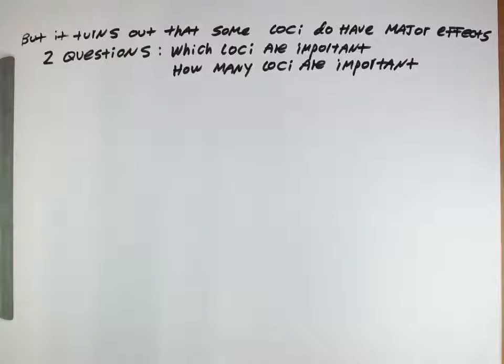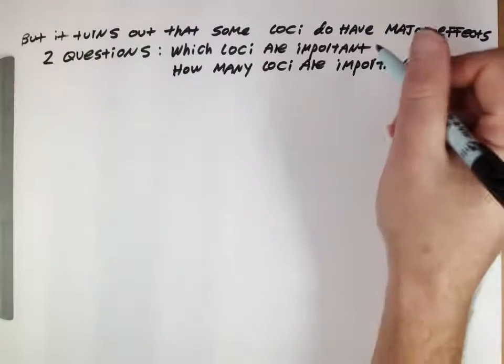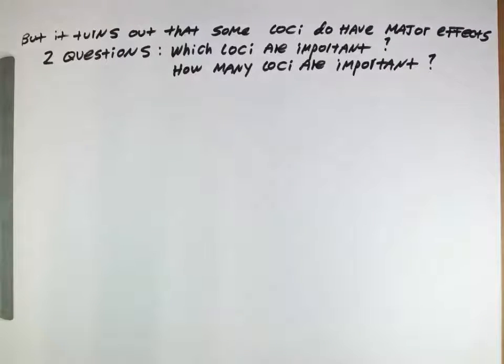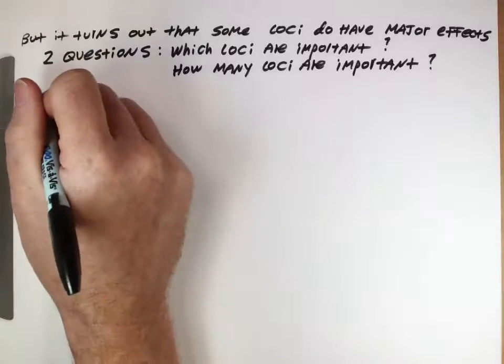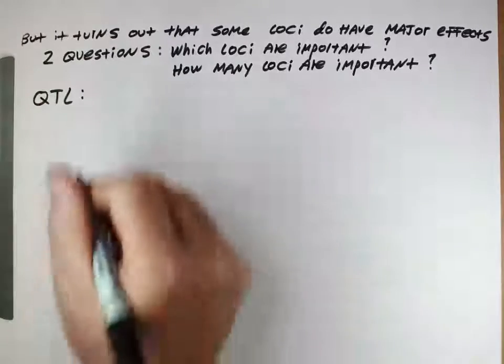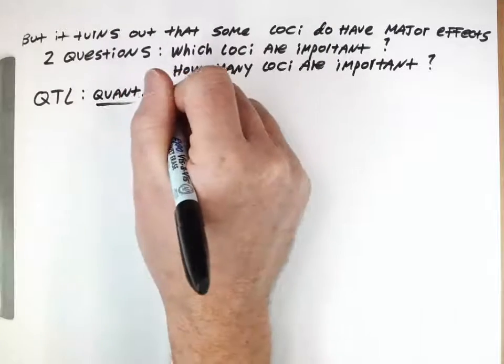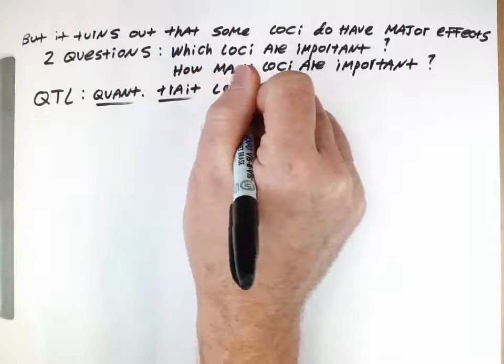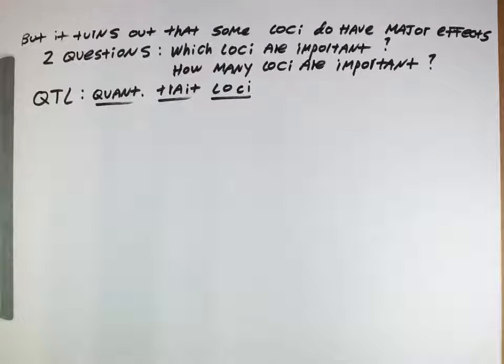So this is a pragmatic, practical genetics question coming out of quantitative genetics. Although we know lots of loci are important, some loci may be the most important. Which loci are the most important and how many loci appear to be involved are two fundamental genetics questions about quantitative traits. So the technique that we'll be looking at is called QTL - Quantitative Trait Loci.